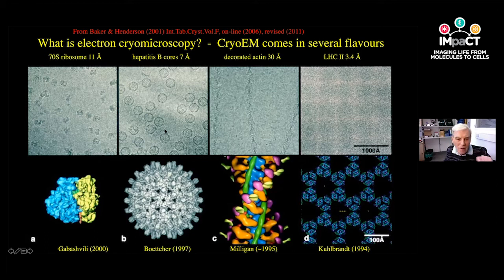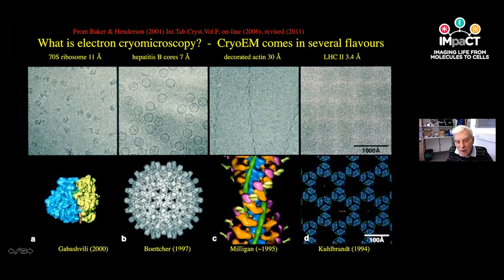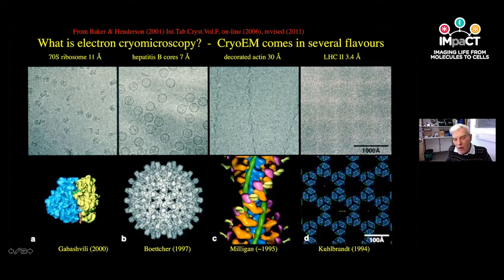The second panel shows single particles of hepatitis B virus cores, randomly distributed in a thin film of ice. Bettina Böttcher worked on this as a postdoc with Tony Crowther and, in 1997, obtained the first sub-10-ångström, sub-nanometer structure by single particle EM, benefiting from averaging across the icosahedral symmetry. The spikes on the surface show a four-helix bundle — an indication of how higher symmetry enables more rapid progress than particles without symmetry.